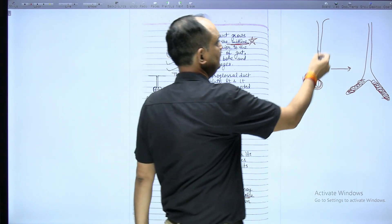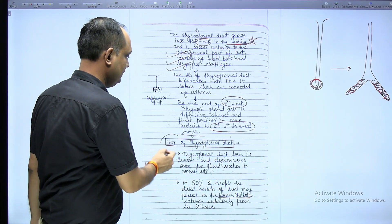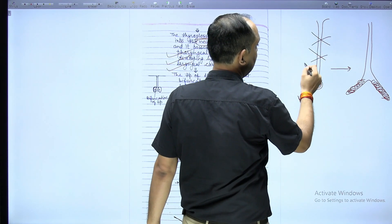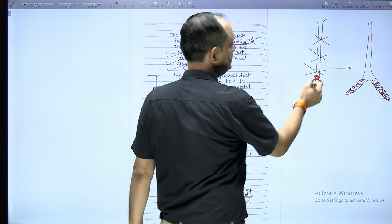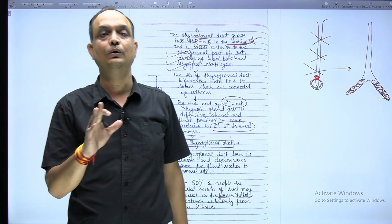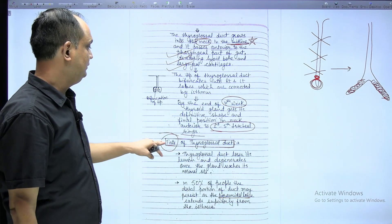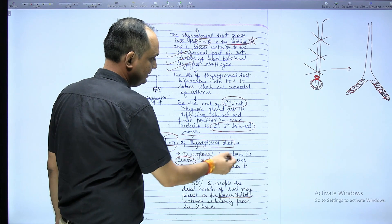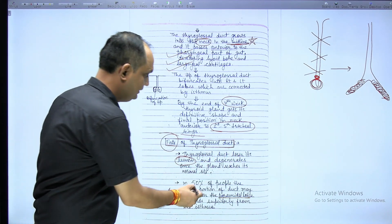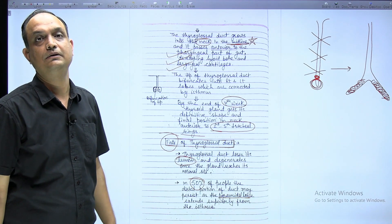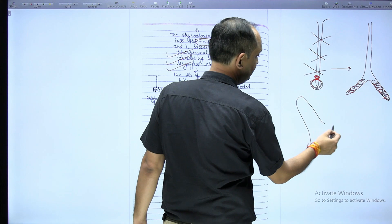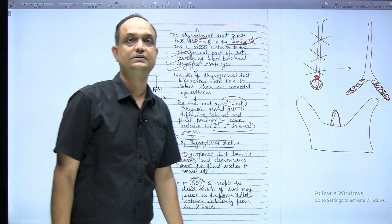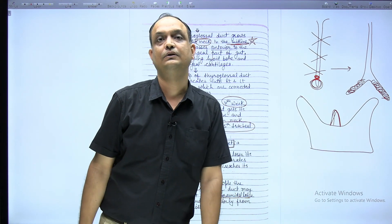What is the future or fate of the thyroglossal duct? The duct will disappear. This part of the duct will disappear, except that sometimes the most distal portion of the duct persists as a pyramidal lobe in 50% of people. The lumen is also lost and the complete duct degenerates, except in 50% of cases where its distal part persists as a pyramidal lobe, which remains connected with the isthmus of the thyroid gland.